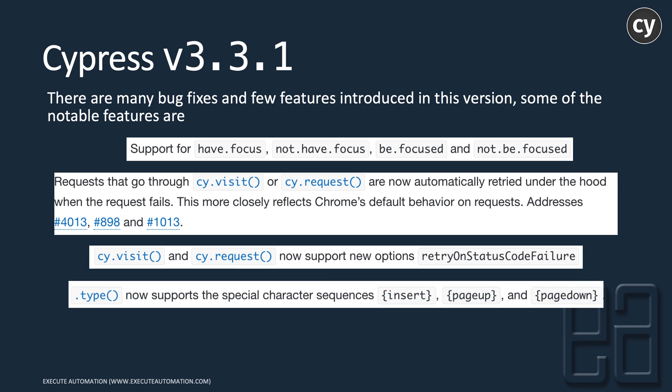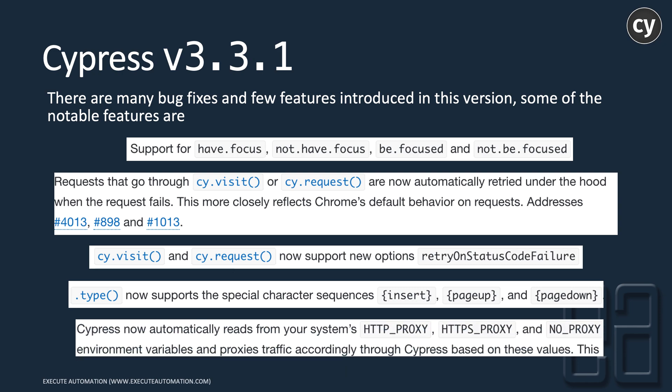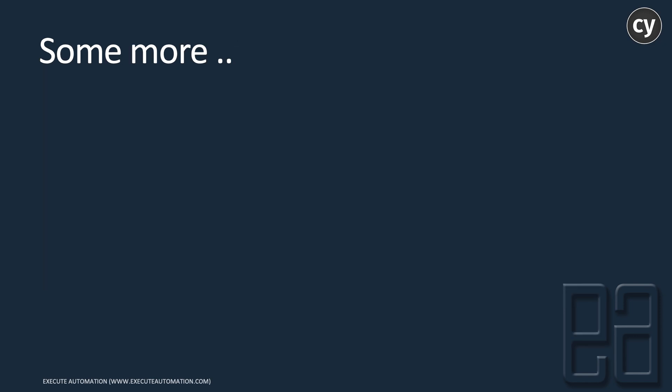The cy.type command now supports special character sequences, such as Insert, Page Up, and Page Down. These are things not available in many different tools, and it's currently supported with Cypress, which is really welcoming. Finally, Cypress now automatically reads from your system's HTTP proxy, HTTPS proxy, or no_proxy environment variables and proxies traffic accordingly through Cypress based on these values — which is also very cool. You can set proxy settings in Cypress version 3.3.0 and 3.3.1.